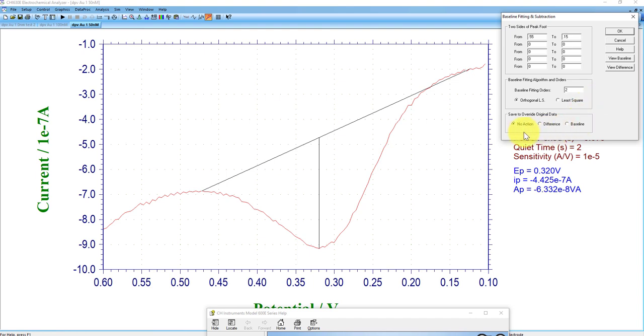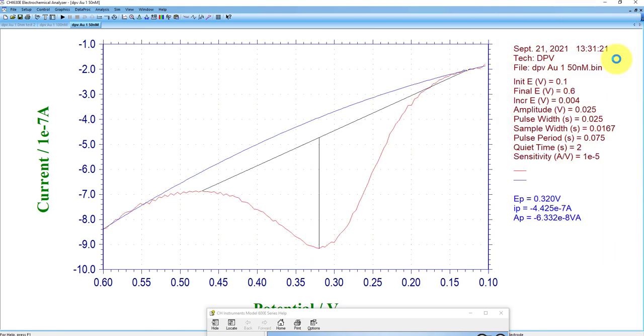And then you can choose down here to save or override the data. I would never override the data, always keep it here in case you do a fit that's bad. So no action is good. And then I'm going to use a least squares fit here, and then I'm going to click view baseline.